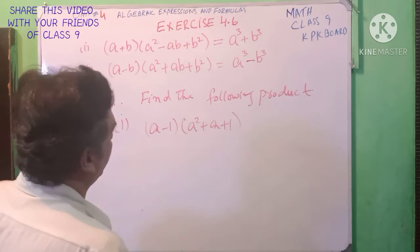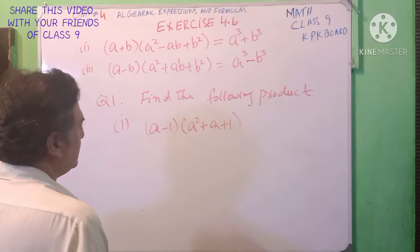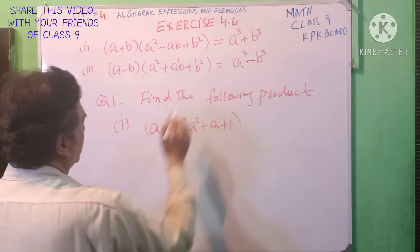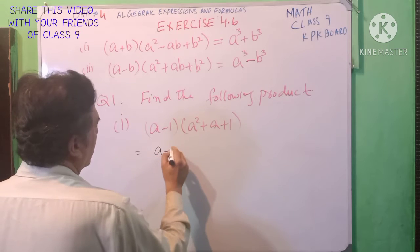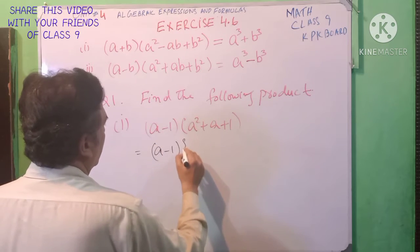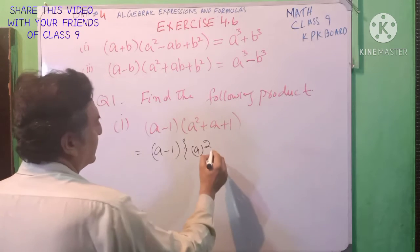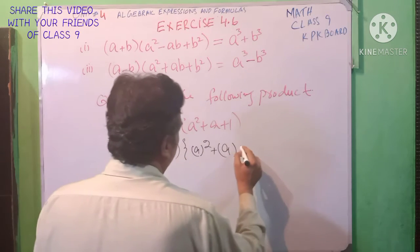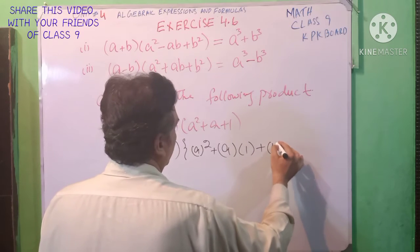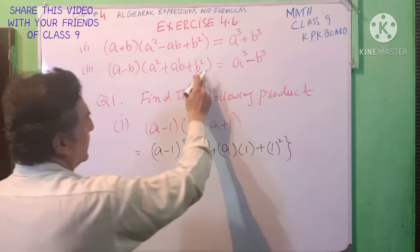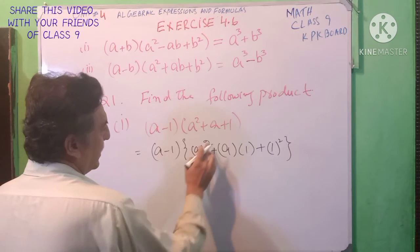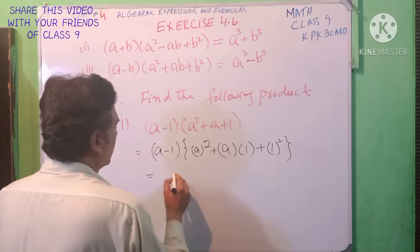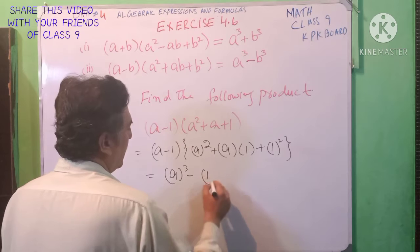ہمارے پاس دو factors ہیں، ہم نے اس کا product find کرنا ہے۔ اس کو ہم فارمولا میں convert کریں گے — یہ والا فارمولا use ہوگا: a minus b, a square plus ab plus b square. a value is 'a' and b value is one. یہ ہمارے پاس آگیا: a minus b, a square plus ab plus b square equal to a cube minus b cube.